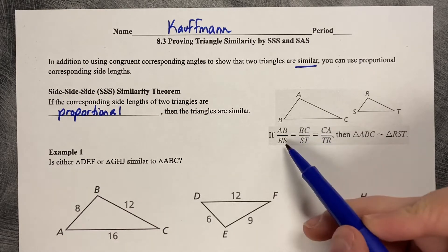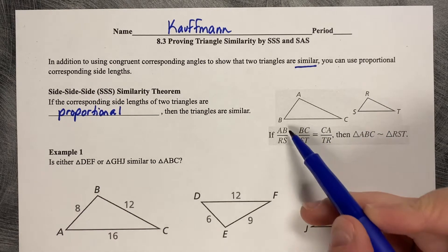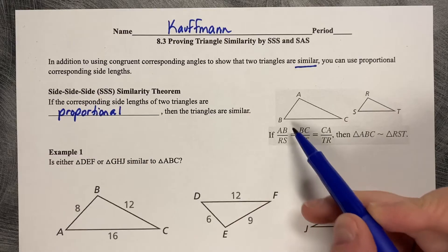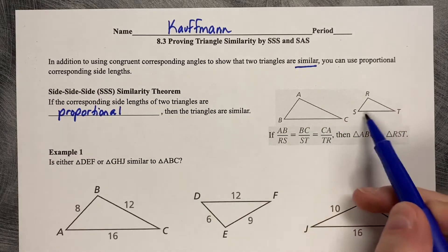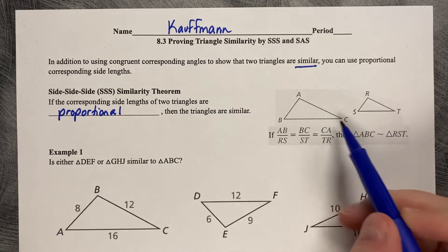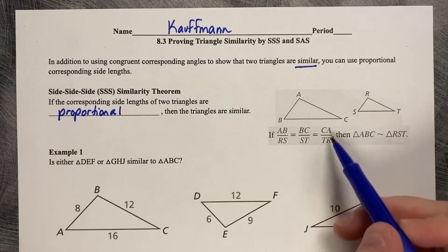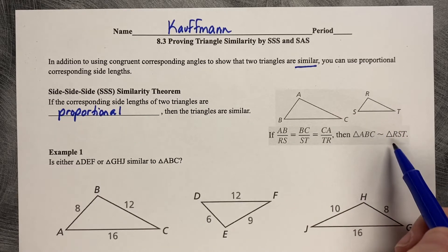Side-side-side similarity theorem. If the corresponding side lengths of two triangles are proportional, then the triangles are similar. So if AB is proportional to RS, not congruent, proportional, BC is proportional to ST, and CA is proportional to TR, then the two triangles are similar.